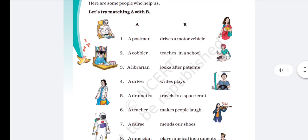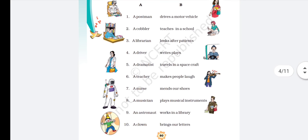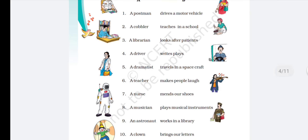Let's try matching A with B. What does a postman do? A postman brings her letters. What does a cobbler do? A cobbler mends her shoes. What does a librarian do? A librarian works in a library. A driver drives a motor vehicle. A dramatist writes play. A teacher teaches in a school. A nurse looks after the patients. A musician plays musical instruments. An astronaut travels in a spacecraft. A clown makes people laugh.